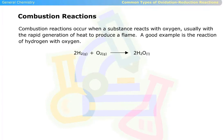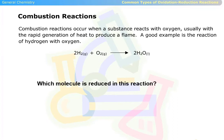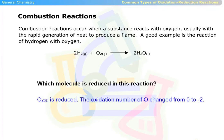Combustion reactions occur when a substance reacts with oxygen, usually with the rapid generation of heat to produce a flame. A good example is the reaction of hydrogen with oxygen, seen below. Which molecule is reduced in this reaction? Oxygen is reduced — the oxidation number of oxygen changed from 0 to minus 2.